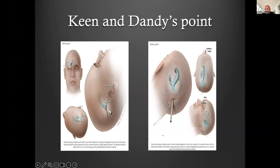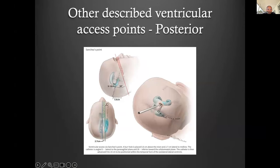Dandy's point I've left here for historical reference. Publications have shown that the risk of injuring the transverse sinus was quite high, hence the elevation above the inion. Sanchez's point is mainly aimed at placing your catheter into the temporal horn — the reference points are fairly standard: 5.6 centimeters and 2.7 centimeters off the midline. The way you aim is to get the catheter into the temporal horn, which I tend to get my registrars to avoid.